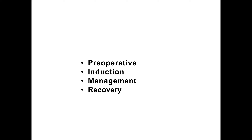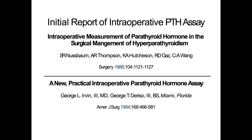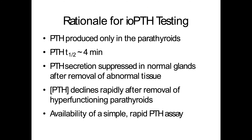A parathyroid crisis presents with a calcium level greater than 15. These patients need to be hydrated quickly to dilute the calcium, then diuresed with a loop diuretic to promote calcium and fluid excretion. You may also give glucocorticoids, calcitonin, and dialyze the patients. As far as the intraoperative parathyroid assay, it's produced only in the parathyroid — so it's very specific — with a very short half-life of about four minutes, making it easy to determine quickly if you've gotten the right gland.